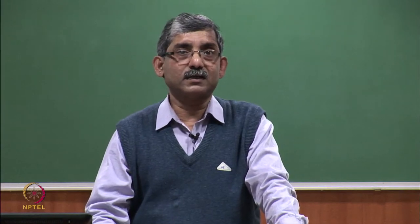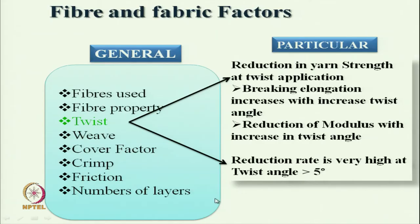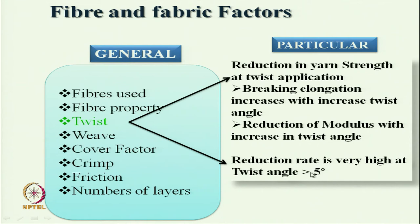As far as yarn characteristics are concerned, twist is a very important parameter. If we increase the yarn twist, due to the obliquity effect the yarn strength reduces. We must try to use twist as low as possible. Breaking extension increases with increase in twist level, and modulus also reduces. We must keep the twist at the lowest level — if possible use zero-twisted filament. Reduction in modulus is very high at a twist angle more than 5 degrees, so twist angle less than 5 degrees is recommended.